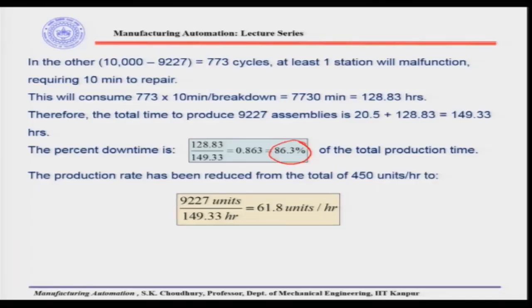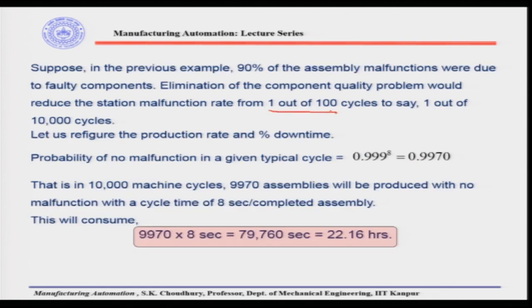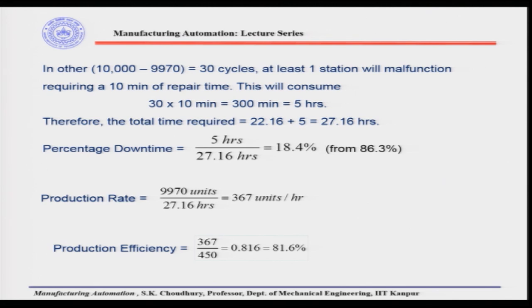Station breakdown basically happens because of improper tolerances or improper parts which go into the assembly and stop the machine. The subsequent and adjacent machines also get affected. If we can improve the product quality — for example, instead of 1 out of 100, we have 1 out of 10,000 cycles malfunctioning — then the percentage downtime reduces drastically from 86.3 to 18.4 percent. Machine breakdown has to be considered when taking care of the production flow line for assembly.